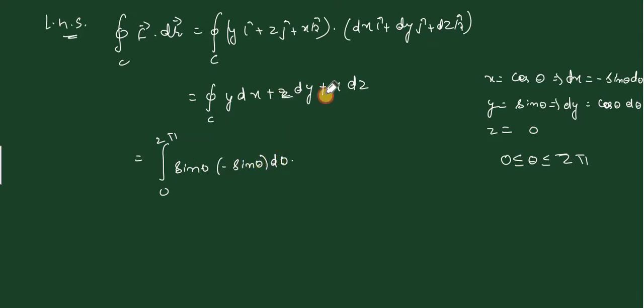Substituting: y value is sin theta, dx value is minus sin theta d theta. Z component is 0 and z is 0, so the third term vanishes. This gives minus integral from 0 to 2 pi of sin squared theta d theta.